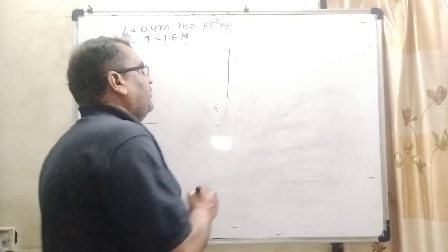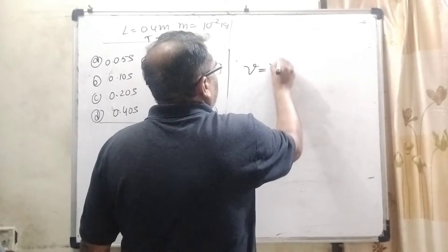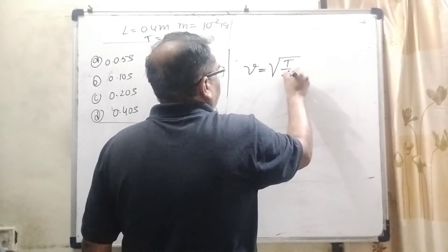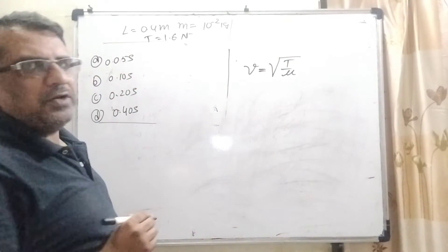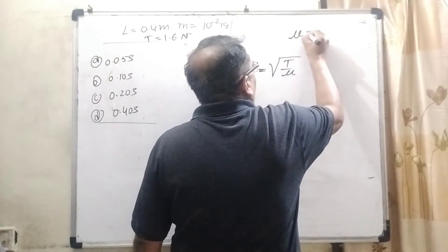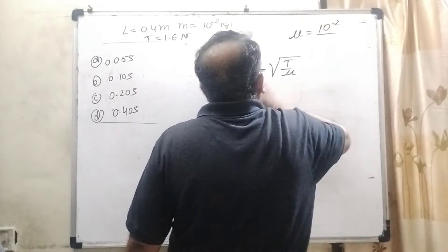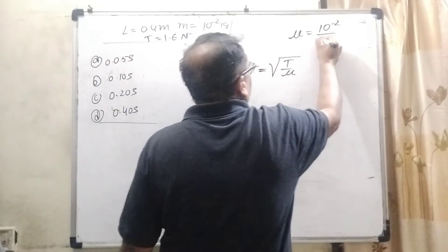Now in this question, we are using the formula of wave in the string that is V equal to square root of T by μ. Here T is the tension force and μ is the mass per unit length. So what is the mass? Mass is given 10 raised to the power minus 2. And what is the length? Length is given 0.4.